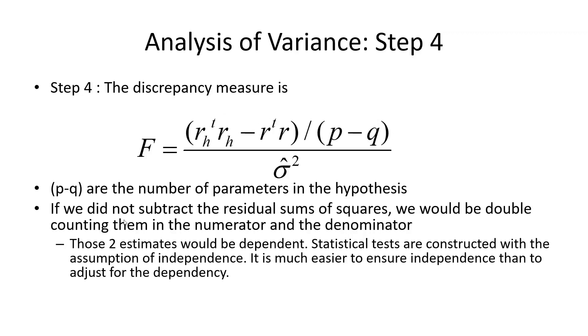And if we didn't do that, we would be double counting them in the numerator and the denominator. And that would mean that the two estimates would be dependent. So the two estimates of sigma squared would be dependent. Whereas now, because we are not double counting them, they are independent. It is much easier to construct a test statistic with the assumption of independence. It's much easier than somehow trying to account for or adjust for the dependency.